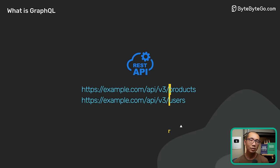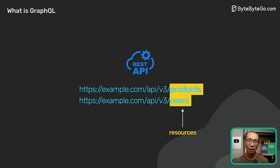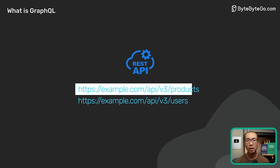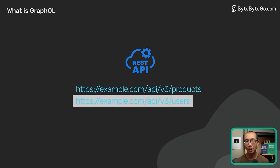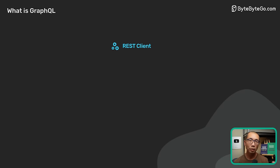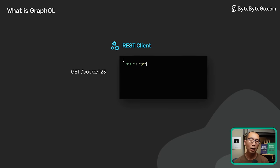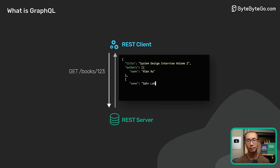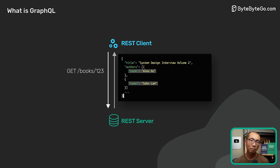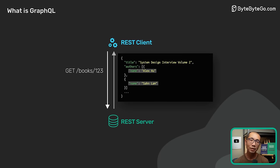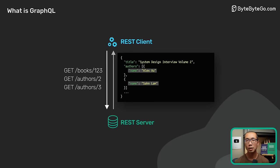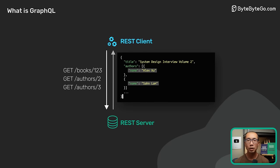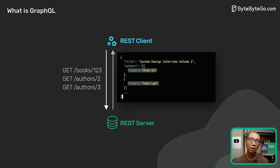REST centers around resources, and each resource is identified by a URL. To fetch a book from a bookstore API, for example, it could look something like this. Note that the author's field is implementation specific — some REST API implementations might break them into separate REST calls.